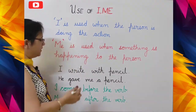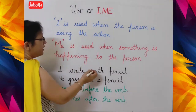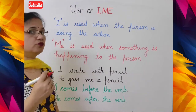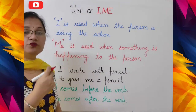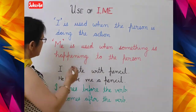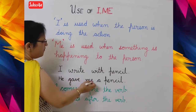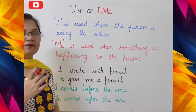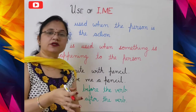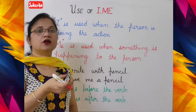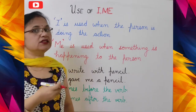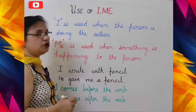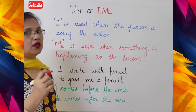For example: 'I write with pencil' — here, who is doing the action? I. So we use 'I'. But 'He gave me a pencil' — here something is happening to that person; he got a pencil. So we say 'He gave me a pencil' — you will use 'me' here.